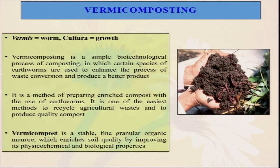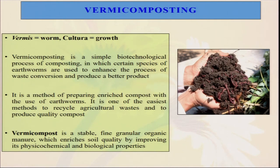Now I am coming to vermicomposting. Vermicomposting is very popular and a very old traditional method — that is why traditionally in our system we always call earthworms the friends of the farmers. The word vermicomposting comes from two words: 'vermis' meaning worm and 'cultura' meaning growth. Vermicomposting is a simple biotechnological process of composting in which certain species of earthworms are used to enhance the process of waste conversion and produce a better product. It is a method of preparing nutrient-rich compost with the use of earthworms, and one of the easiest methods to recycle agricultural waste to produce quality compost.